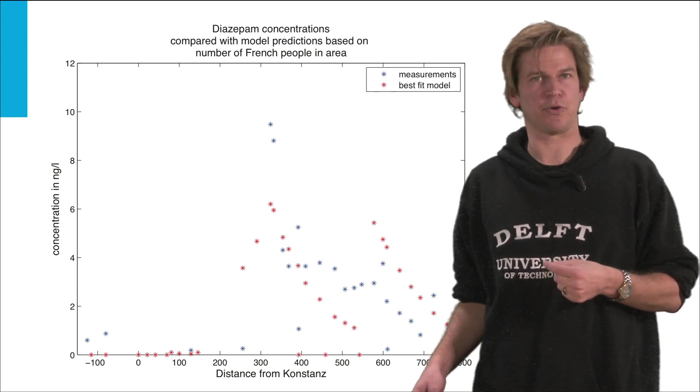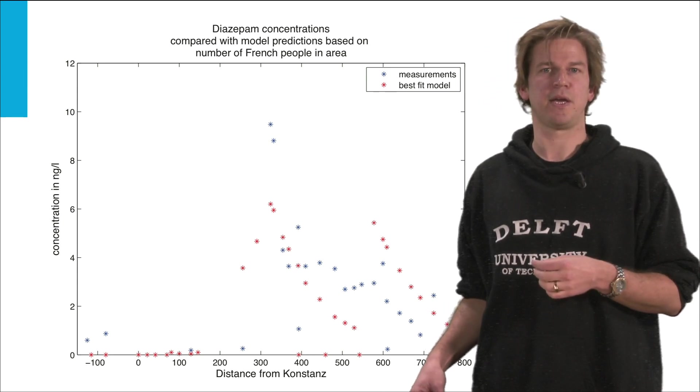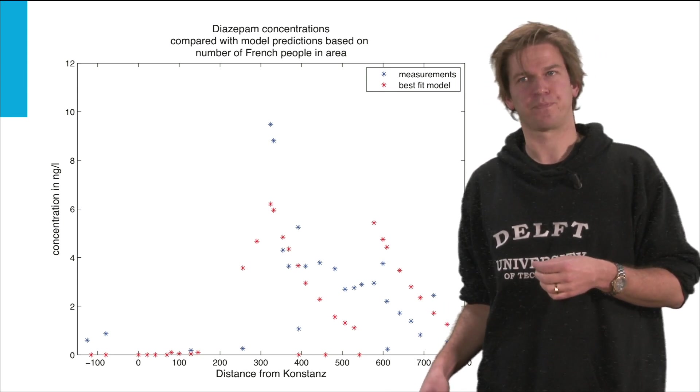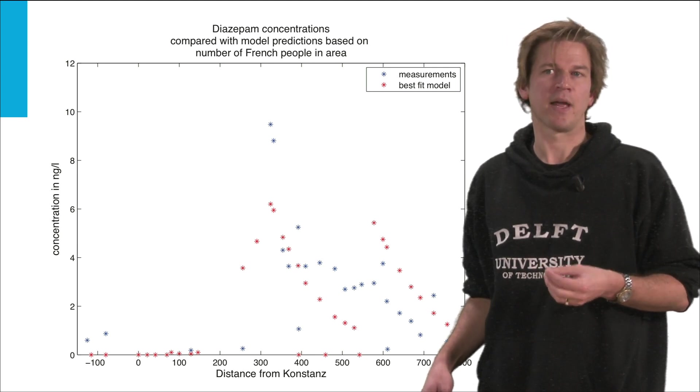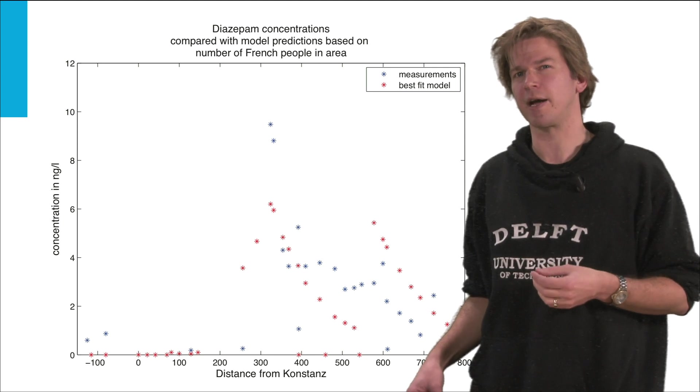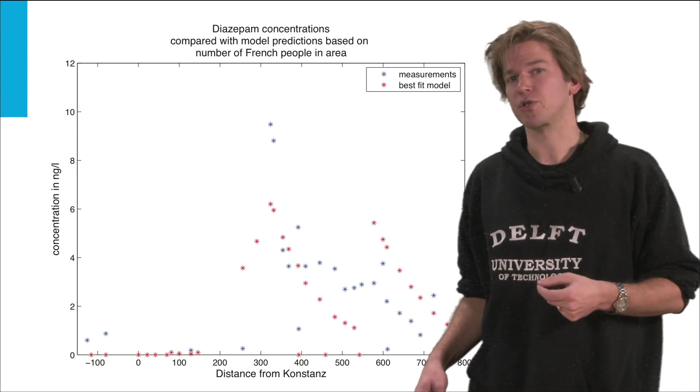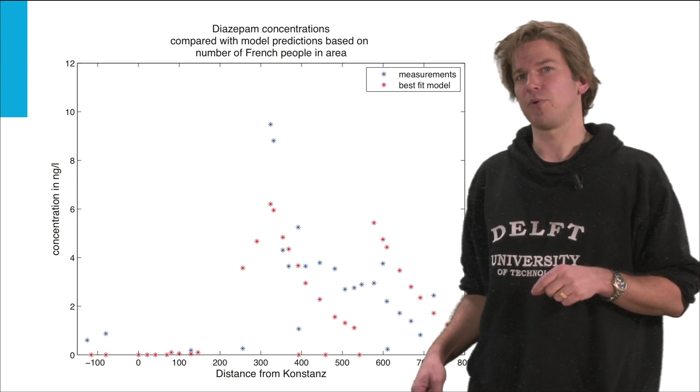If we only test for different demographic explanations we would conclude that the French would be the main cause of Diazepam in river Rhine. However, this model only has a 0.36 R-square which would lead us to believe that humans are not the main cause of Diazepam pollution in river Rhine.